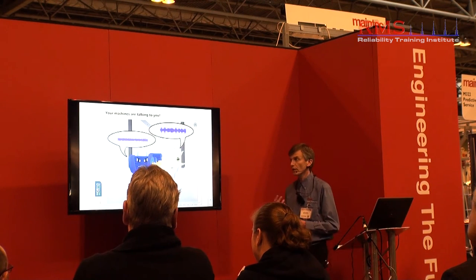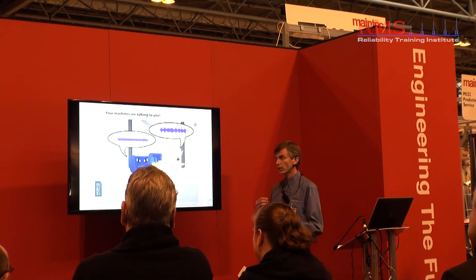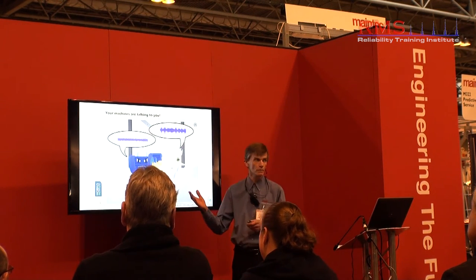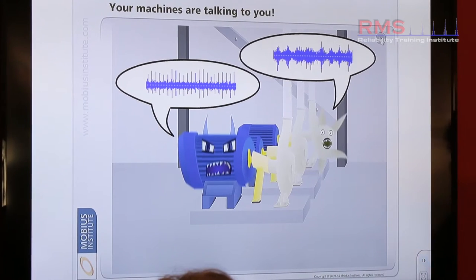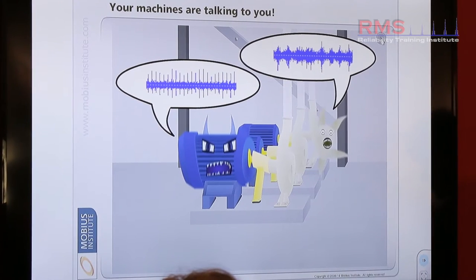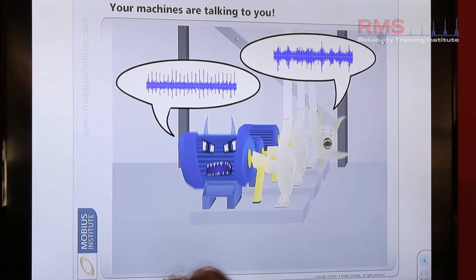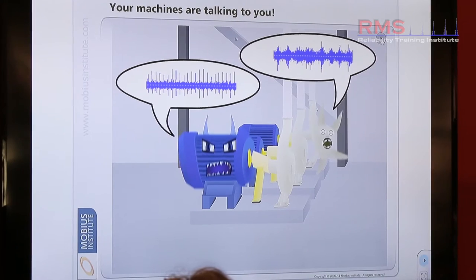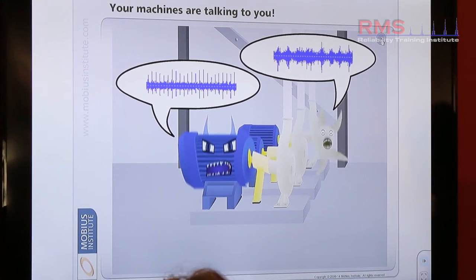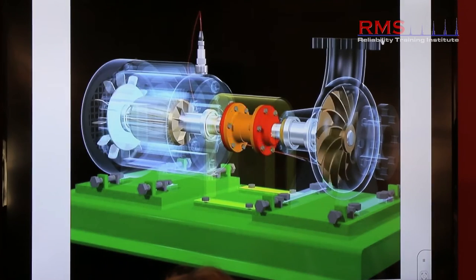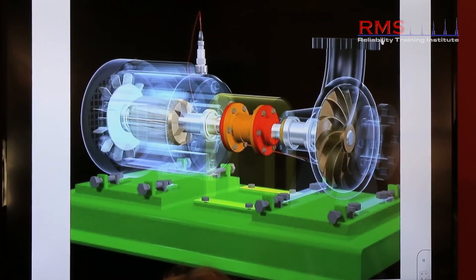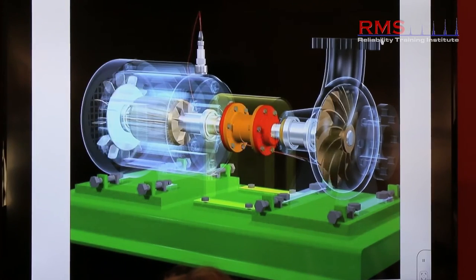With vibration monitoring, we can measure the signals, we can measure the height of the signal, and we can measure the distance — how long each event takes — to understand which component in the machine is problematic. So we can narrow it down to a specific component within the rotating asset.